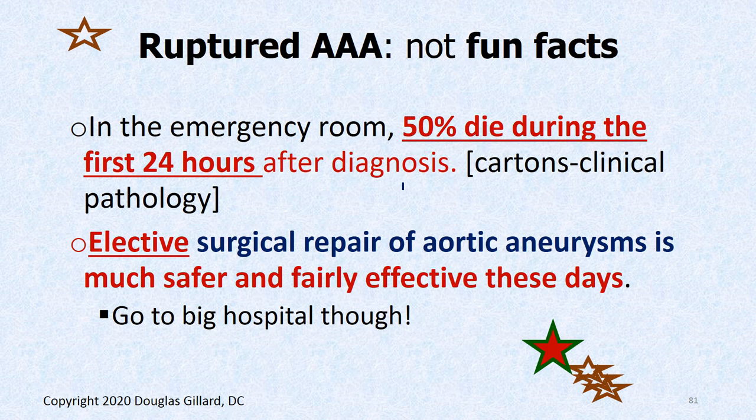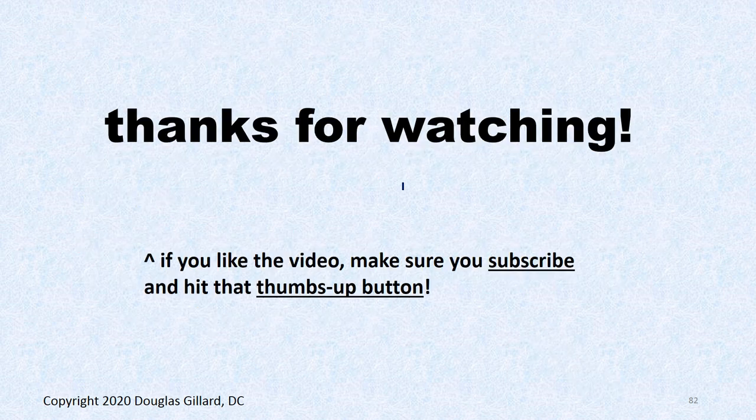Not-so-fun fact: in the emergency room, about 50% of these ruptured abdominal aortic aneurysms die within the first 24 hours after diagnosis. Surgical repair is effective if you catch it in time, but make sure you go to a big hospital, not a little tiny one. That is enough — see you guys later.